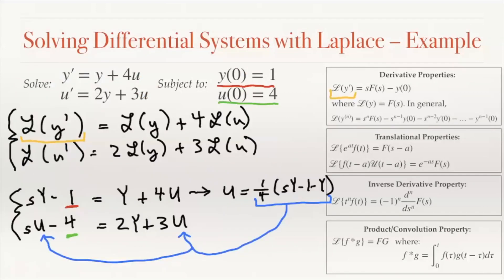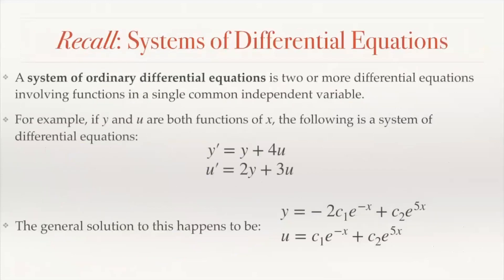If we wanted to solve the system in general — without specific initial conditions but for any initial conditions — all we would do is replace the initial values with constants c1 and c2, then proceed just as we have done but with those arbitrary constants. We would wind up with the general solution to the system of differential equations. That is how we solve systems of differential equations using Laplace transforms.